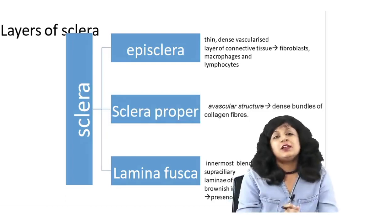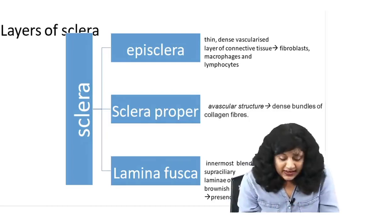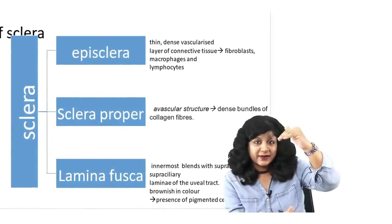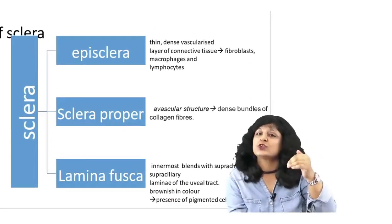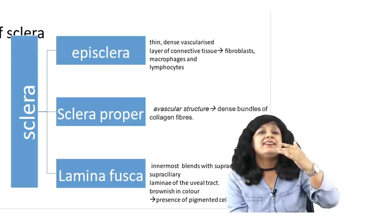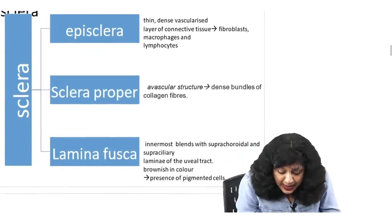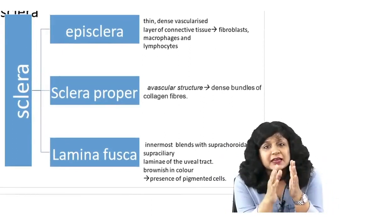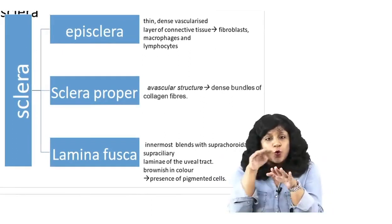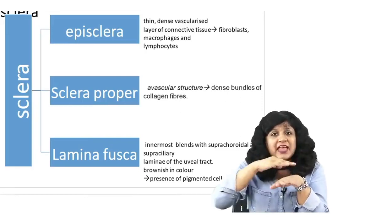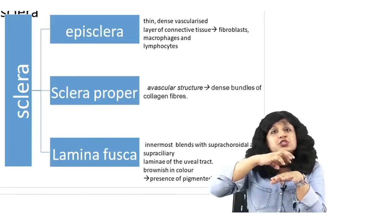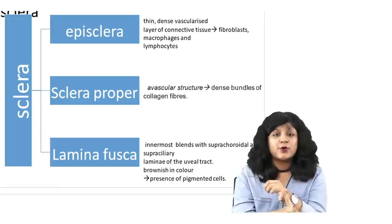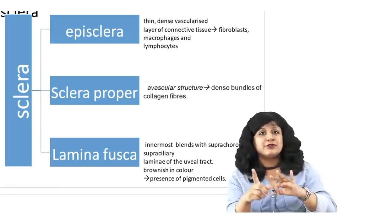How to identify whether it is episcleritis or scleritis? We can divide the sclera into three layers: episclera, sclera proper, and lamina fusca. The episclera is connective tissue over the sclera proper — a dense, vascularized layer containing fibroblasts, macrophages, and lymphocytes. So obviously it has great potential for inflammation to take place, and that is why many times we get congestion and it feels like conjunctivitis, but actually it is not.